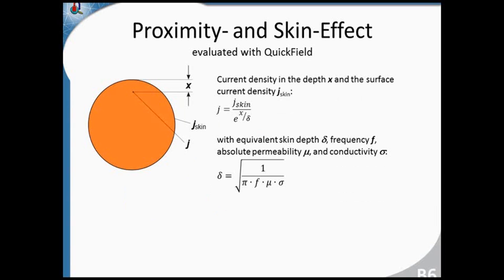Here are the mathematical formulas. They describe how the current density decreases from the maximum value at the surface going deeper. Please be aware that these are just approximate formulas. The equivalent depth delta is the 1/e value, which is about 36.8%. A hollow wire with that thickness would have the same DC resistance as the solid wire at the regarded frequency. This delta has some dependencies: frequency, permeability, and conductivity.